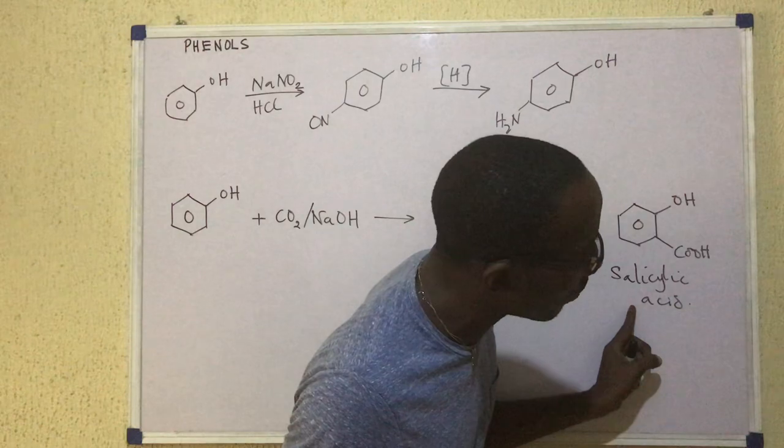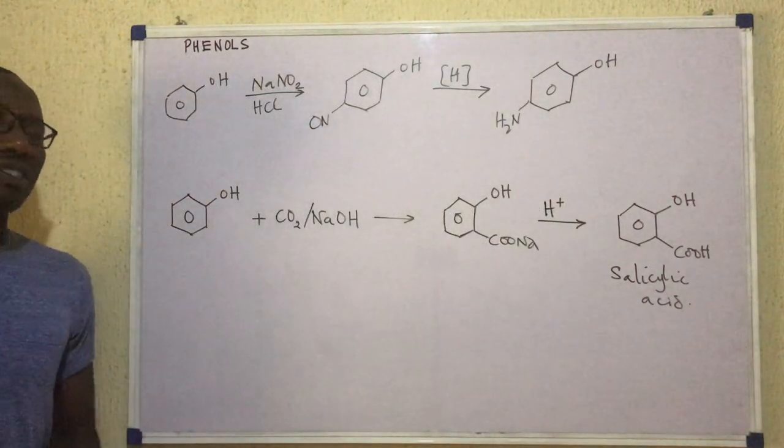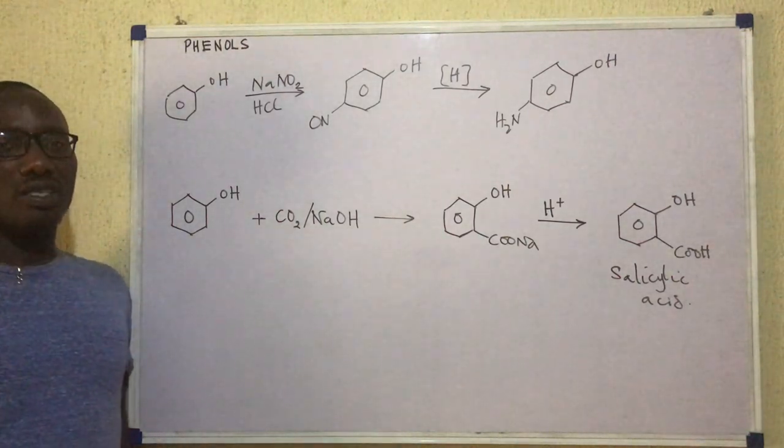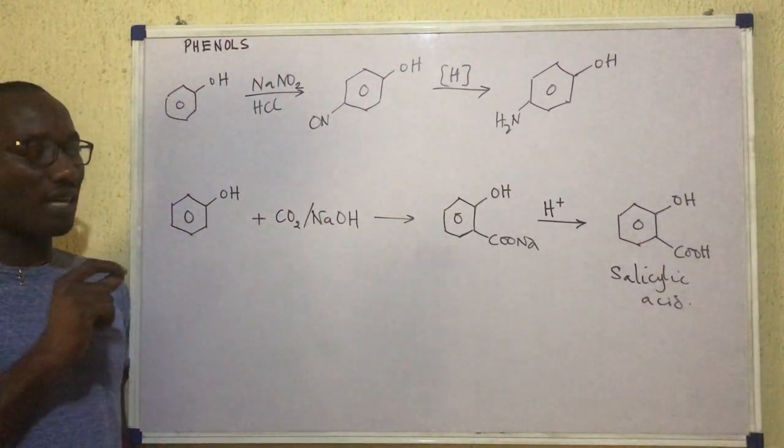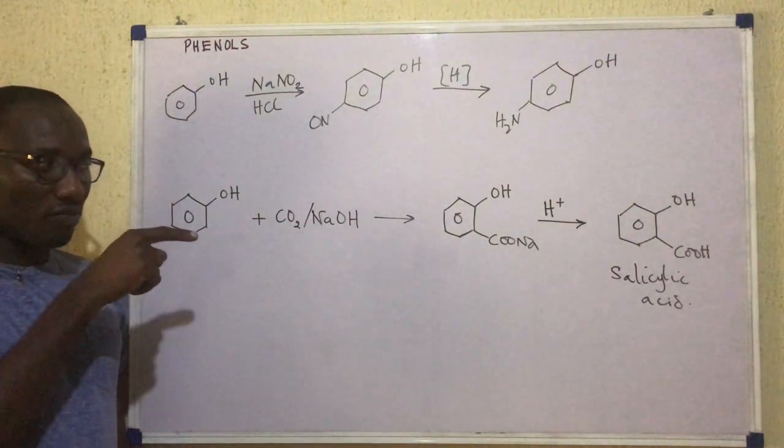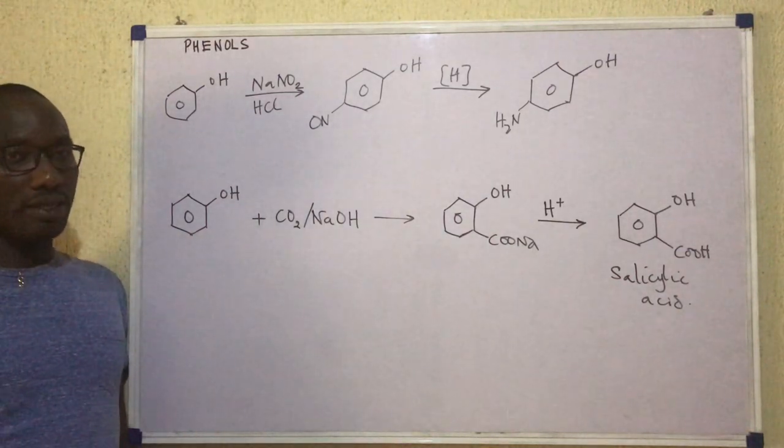So salicylic acid is the product we obtain when we carry out this reaction. And this salicylic acid we are looking at is an important organic material in the synthesis of what we call aspirin. Aspirin is acetylsalicylic acid. So aspirin is a drug. And it's a derivative of this acid that we call salicylic acid.